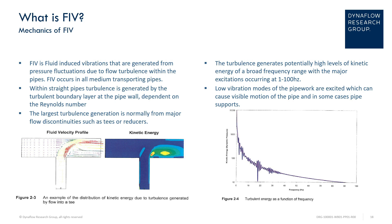Within straight pipes, turbulence is generated by the turbulent boundary layer at the pipe wall, which is dependent on the Reynolds number. However, typically the largest sources of turbulence are generated from major flow discontinuities, such as T's, bends, or reducers.